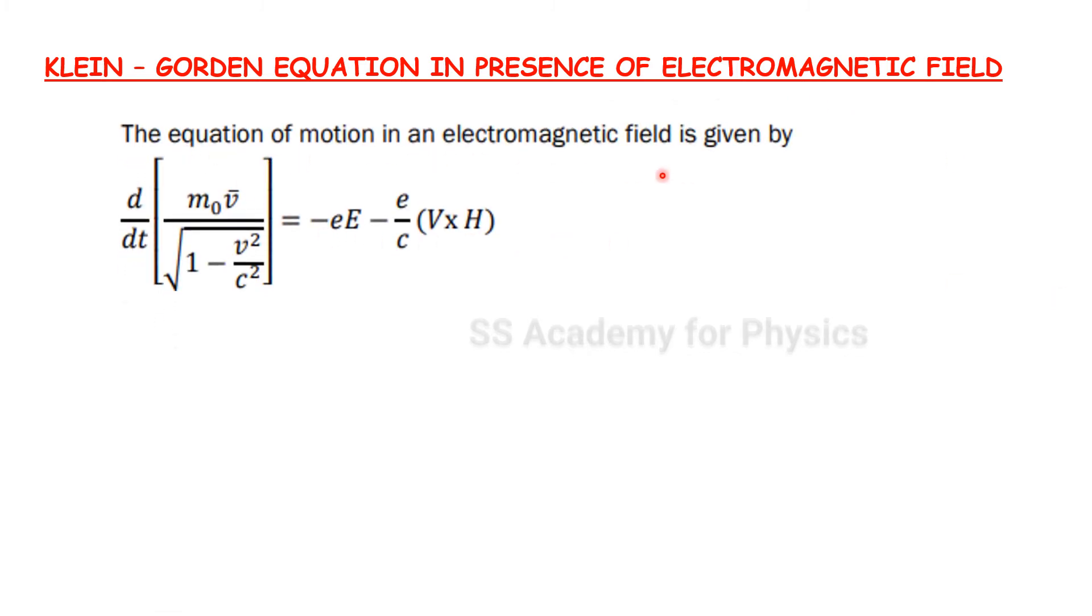The equation of motion in an electromagnetic field is d by dt into m0v divided by root of 1 minus v squared by c squared equals minus eE minus e divided by c times v into H.